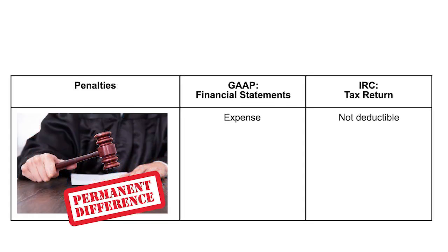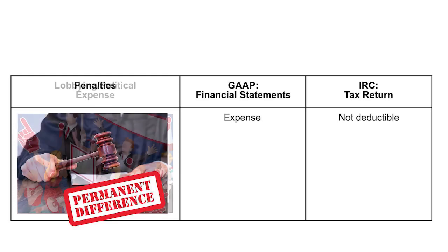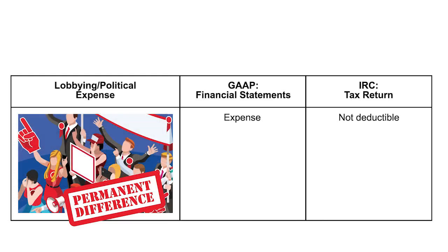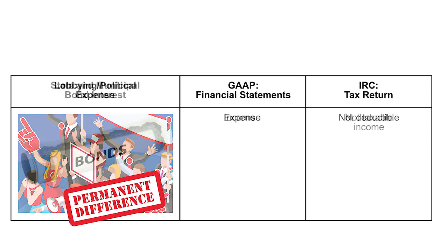Penalties are a financial expense, but we're not going to reward you and allow you a tax deduction. So they are non-deductible and wind up as an M1 adjustment. Lobbying and political expenses are permitted as an expense on your financials, but they are never tax deductible on the tax return. So once again, they will show up as an M1 adjustment.